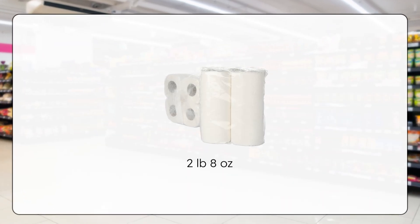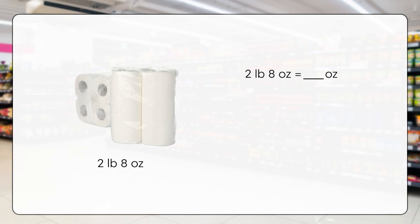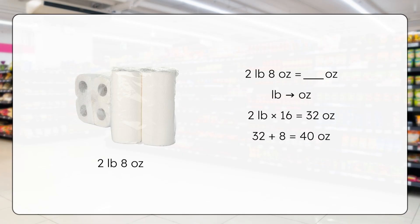Next, rolls of paper towels — they weigh 2 pounds 8 ounces. When we have a measurement that uses 2 different units like this, we call it a mixed unit. So, how many ounces is this in total? Pause here to solve. Let's break this down step by step. First, convert the pounds to ounces: since 1 pound equals 16 ounces, multiply 2 by 16, and that gives us 32 ounces. Then we add the extra 8 ounces. 32 plus 8 equals 40 ounces. So the rolls of paper towels weigh 40 ounces.